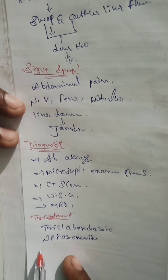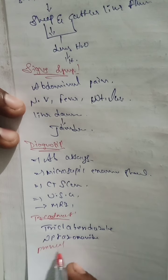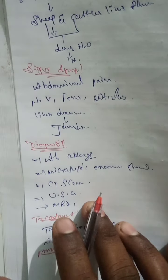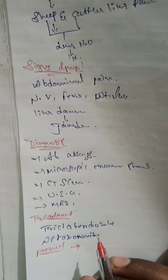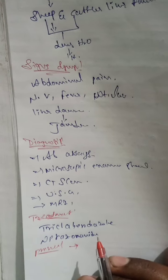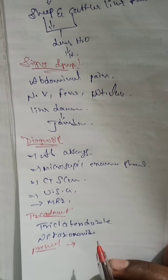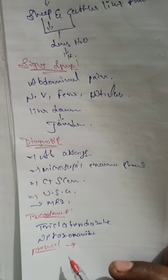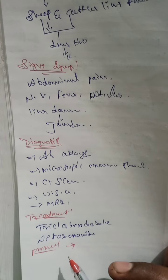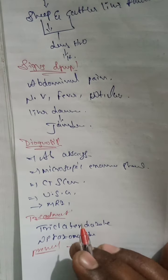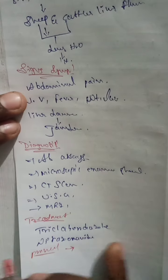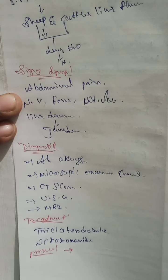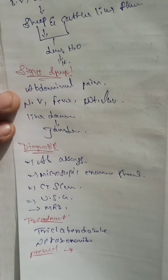What is the prevention? Prevention is the same as the previous trematode infections — the same prevention methods as for schistosomiasis. This is about Fasciola hepatica. If you have any doubts about this topic, tomorrow we will discuss it further. Thank you.